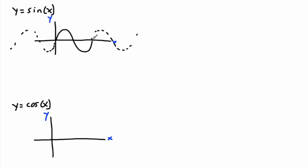One way to think about period: if you're using a computer program and you copy this piece and paste it afterwards, it gives you the whole repeating pattern. You can also find the period from peak to peak, trough to trough, or from one upward crossing to the next. The period of sine x is 2 pi, which makes sense — going all the way around a circle is 2 pi radians.